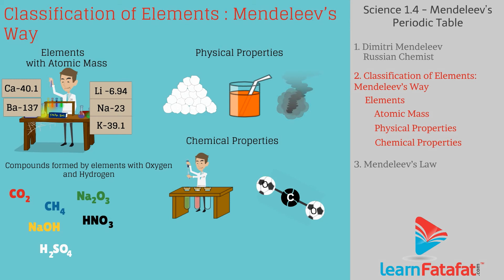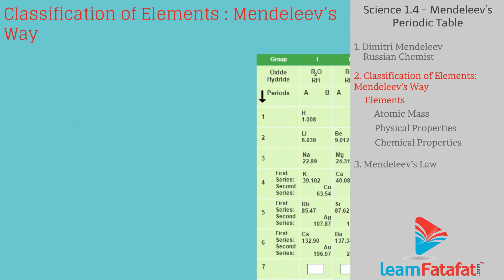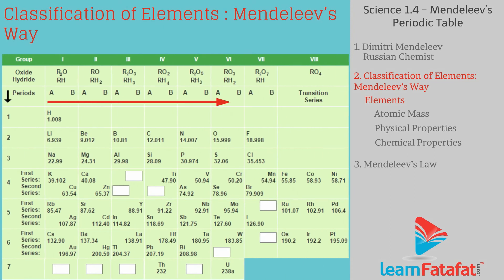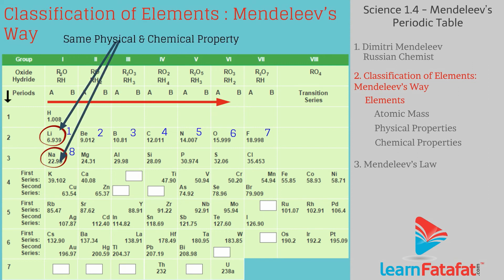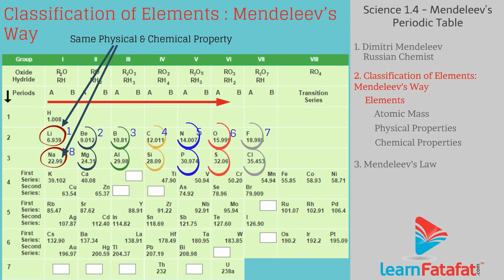He found that the atomic mass of an element is its most fundamental property. So he arranged elements based on increasing atomic masses. Considering their physical and chemical properties, he found that every eighth element had properties similar to the first. So he placed every eighth element below the first, and likewise arranged all 63 elements in rows and columns.